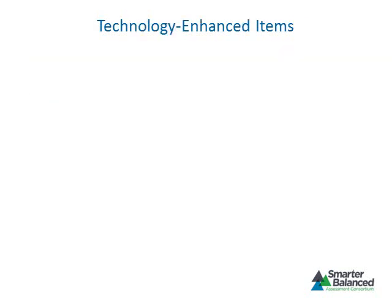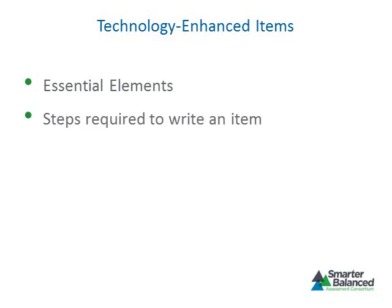This portion of the module has explored several issues specific to technology-enhanced items, including the essential elements such as the interaction space, parameter values, and scoring rules. The module also explored the steps required to write a technology-enhanced item and described the types of technology-enhanced items currently available for development. To learn more about technology-enhanced items, please see the technology-enhanced item specifications developed by the Smarter Balanced Assessment Consortium.